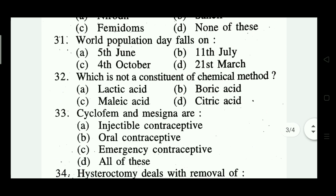Question number thirty-one: World Population Day falls on — 5th June, 11th July, 4th October, 21st March. The right answer is 11th July — option B.